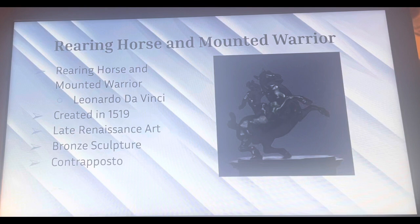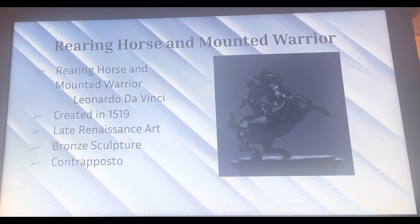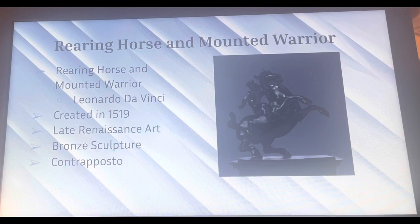Another artwork is called The Rearing Horse and Mounted Warrior, created in 1519, and is a great example of late Renaissance artwork. What's unique about this one is that it is actually a bronze sculpture. It is a great example of contrapposto, with the horse rearing up, giving a feeling of movement — you can imagine what a horse would look like rearing up with a person on top. It is one of his greater sculptures.